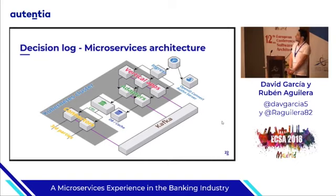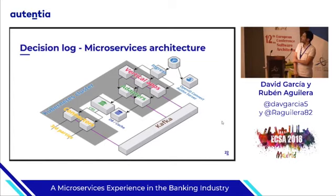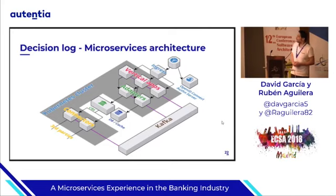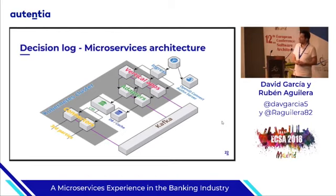This diagram shows our microservices architecture. We have classified our microservices in three types depending on their role. First, we have vertical apps, which receive the REST client requests and implement the business logic, delegating to adapter microservices that manage the different domains — for example, accounts, transactions, cards, customers, and so on. Then we have connector microservices, which are responsible for integration between the core banking system and other third parties. All this happens synchronously. On the other hand, state changes are propagated asynchronously as Kafka events, which are then consumed by any microservices that require an up-to-date view of the model.